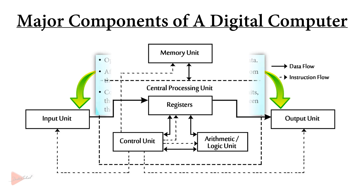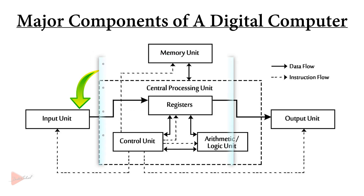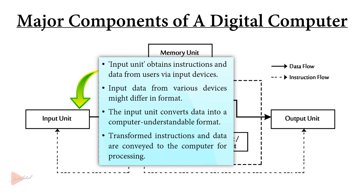Now we will talk about input and output units. Before any operation can be executed, the user is required to input instructions and data into the computer system. Likewise, once the data has been processed, the information needs to be transmitted from the computer system to the user. To facilitate this exchange, every computer system integrates input and output units that function as communication channels connecting the computer system and the user. The input unit receives instructions and data from the user, facilitated by input devices like keyboards, mouse, light pens, and so on.